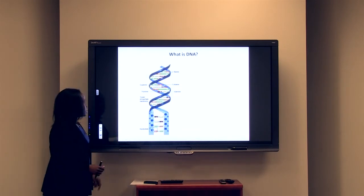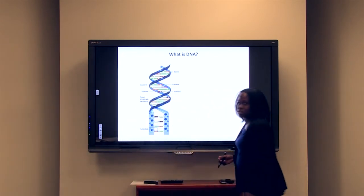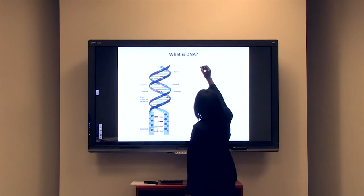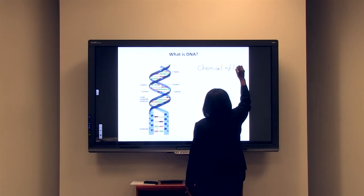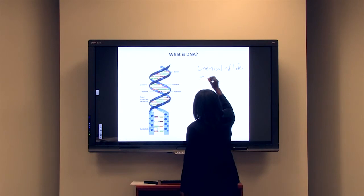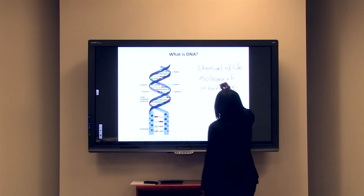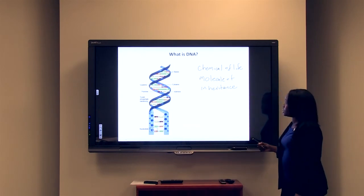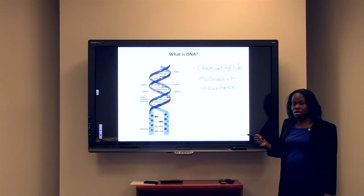First of all, what is DNA? If you look at different sources, whether you look in books or online, some people will call DNA the chemical of life. It's also called the molecule of inheritance, and it can also be termed the molecule of life. There are different terminologies that are used to describe DNA, but the important thing is that we know that DNA is essential to life.